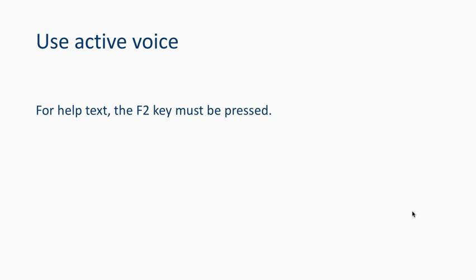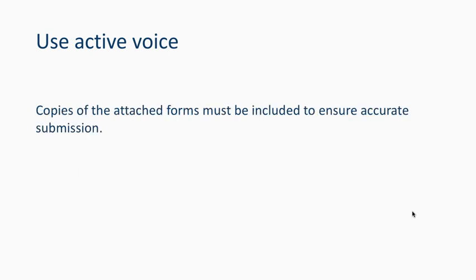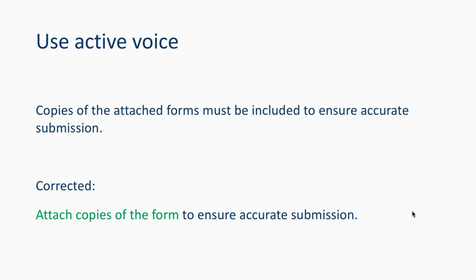Active voice is preferred over passive voice. In active voice, the subject performs the action. In passive voice — 'the F2 key must be pressed for help' — it's awkward and confusing. In active voice: 'Press the F2 key for help.' Another example: 'Copies of the attached forms must be included to ensure accurate submission' becomes 'Attach copies of the form to ensure accurate submission.'